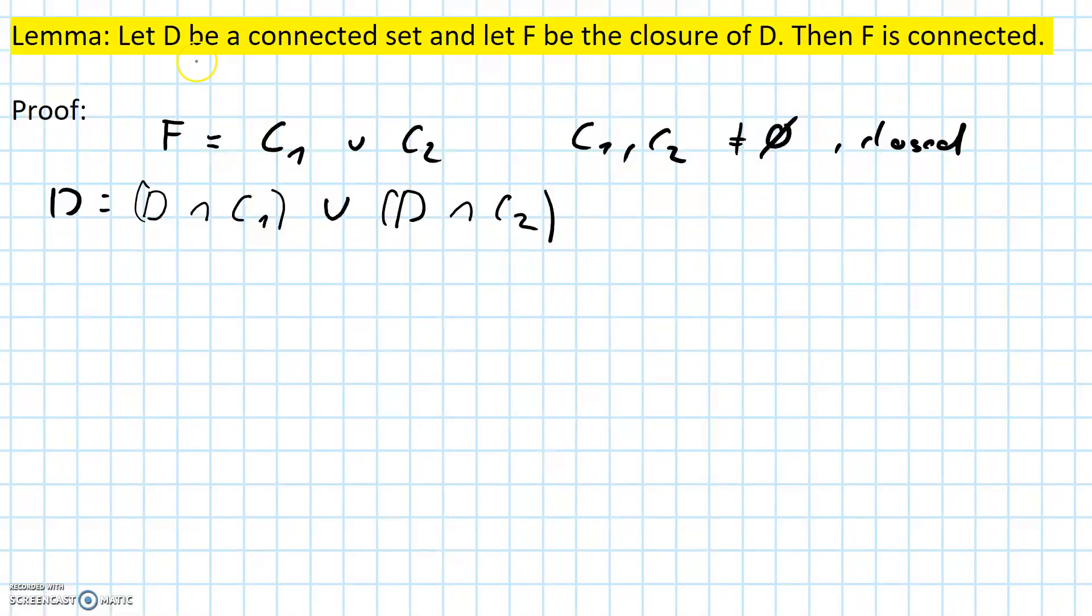And since D is assumed to be connected, one of these intersections has to be empty. So without loss of generality, assume that the intersection of D with the set C2 is empty.